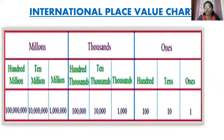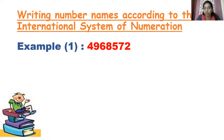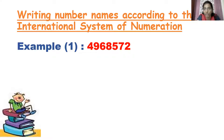So how do you write a number or numeral in the international place value chart? Inserting commas plays an important role. When you have to read a number or write a number in words, to separate the periods, you must insert commas. Commas are used to separate the periods, and they make it easy to read the given number and write the given number in words easily.